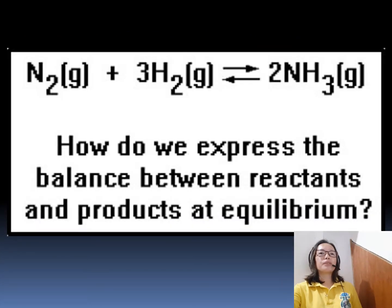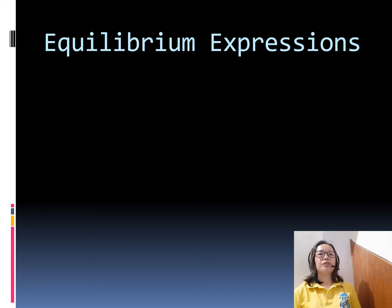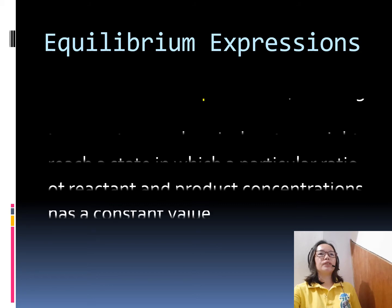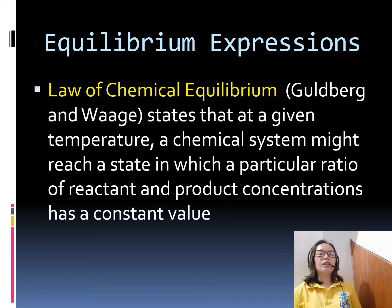How do we express the balance between reactants and products at equilibrium? We are going to use equilibrium expressions. This concept was proposed by Goldberg and YH, and it states that at a given temperature, a chemical system might reach a state in which a particular ratio of reactant and product concentrations has a constant value.